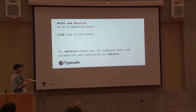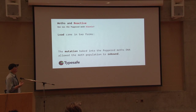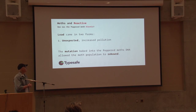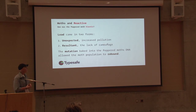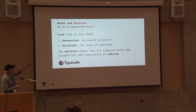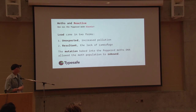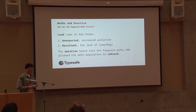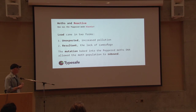So the peppered moth responded by being elastic, by being resilient, and by being message-driven. For elasticity, load came in two forms: unexpected — the increased pollution which changed the environment — and resultant, as a result of the first type of load. Load can compound; that's how cascading failures happen in load-balanced systems. The lack of camouflage was the resultant load, and the peppered moth dealt with it through a mutation baked into its DNA, allowing that population to rebound. The dynamics changed and the dark-colored moth became the majority.